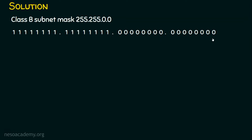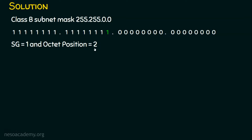In order to find the subnet generator, we need to travel from right to left. The first one we encounter — what is its decimal place value? It is 1. The bit positions go 1, 2, 4, 8, 16, 32, 64, 128. And which octet is the subnet generator in? It is not in the first octet but in the second octet. So the subnet generator is 1 and the octet position is 2.